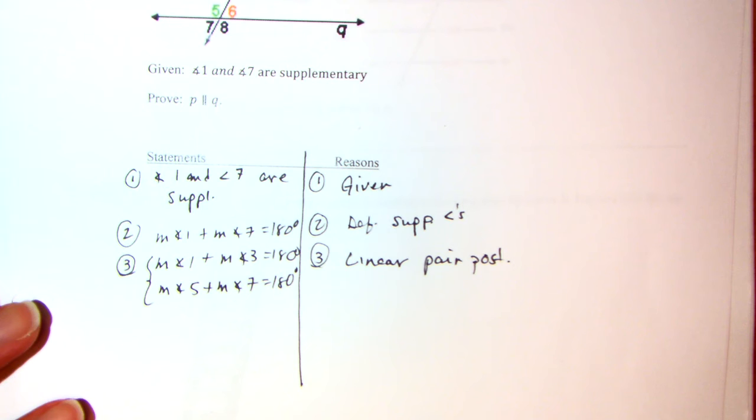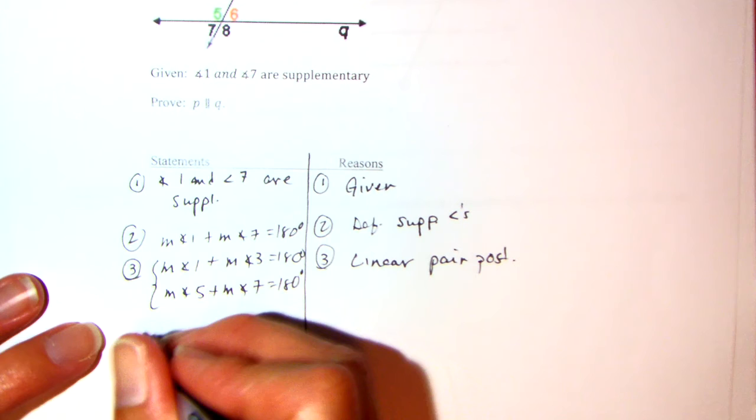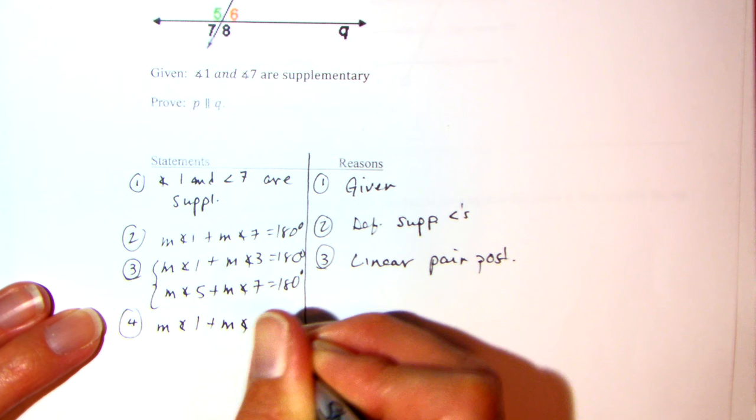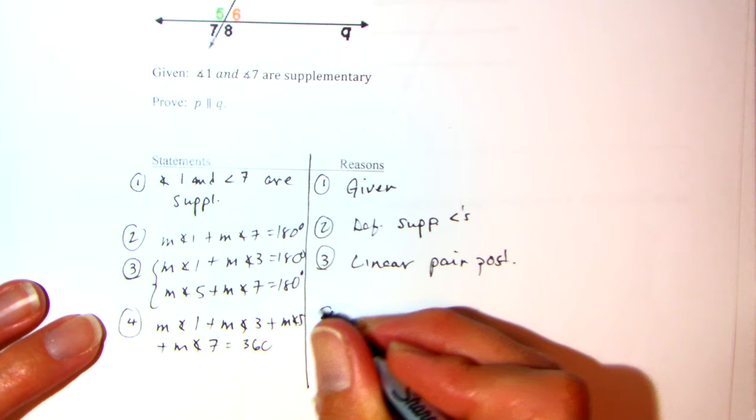Now let's add up all four of those angles. Measure of angle 1 plus measure of angle 3 plus measure of angle 5 plus measure of angle 7 equals 360. I'm adding those two equations together — addition property of equality.